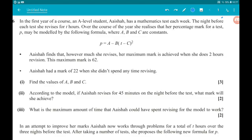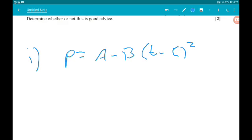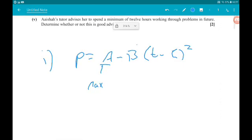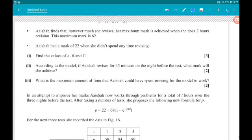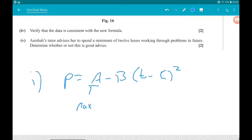P is A minus B lots of t minus C squared. Now, in the completed square form, the number on its own here is the maximum. If we had a plus of the bracket, it would be the minimum. But because we're minusing the bracket, it's a maximum. So we know that the maximum mark is 62. So A is 62.